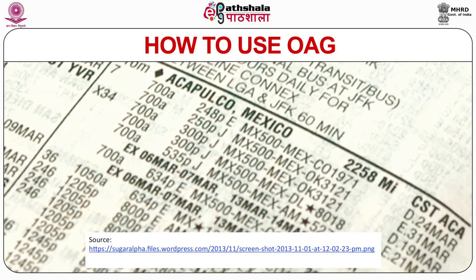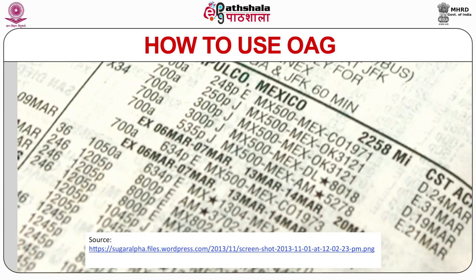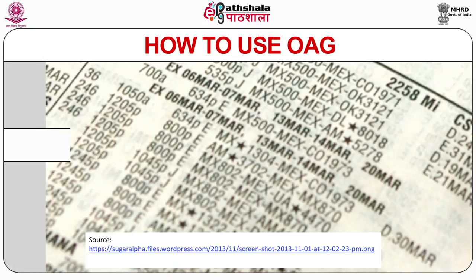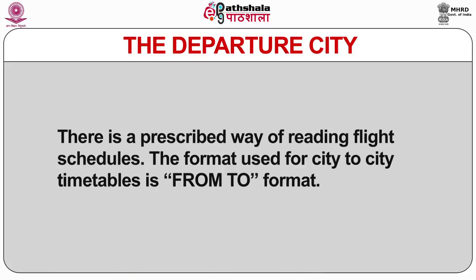It explains all the signage used: airport codes, flight codes, flight numbers, days of the week, different types of aircraft, number of stops, classes or services available on a particular flight, and departure and arrival times. The next element is the Departure City.